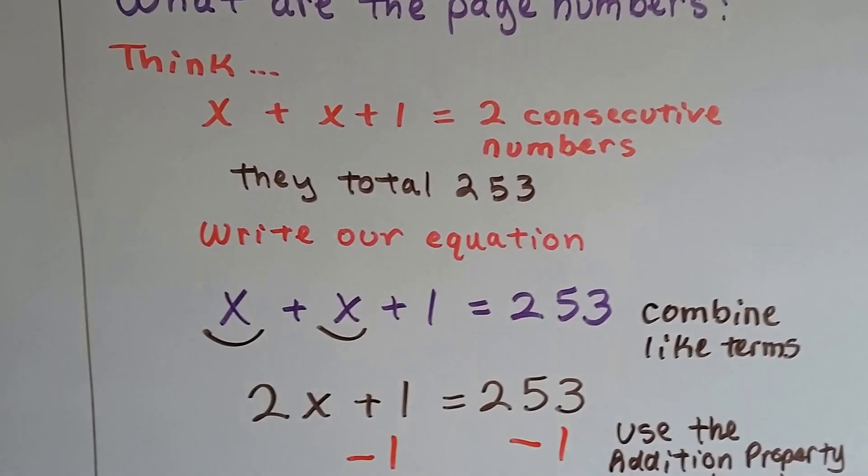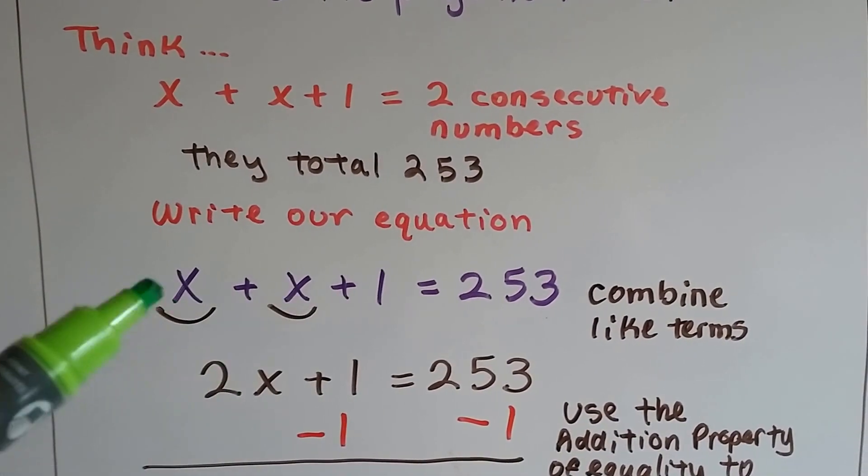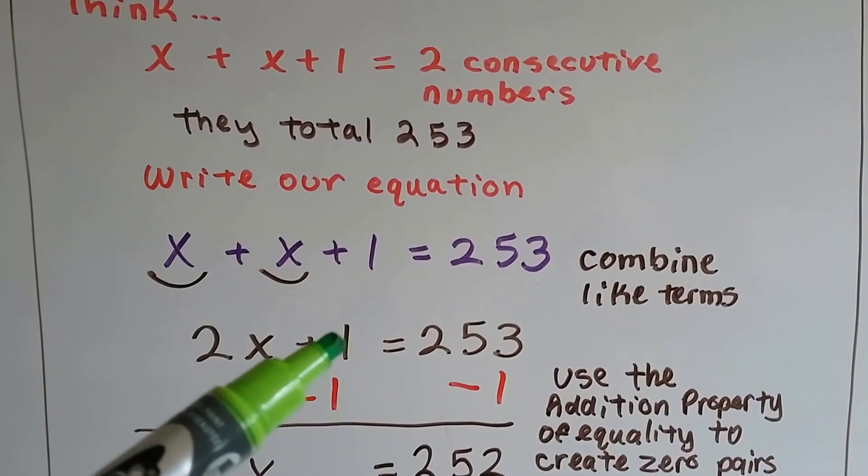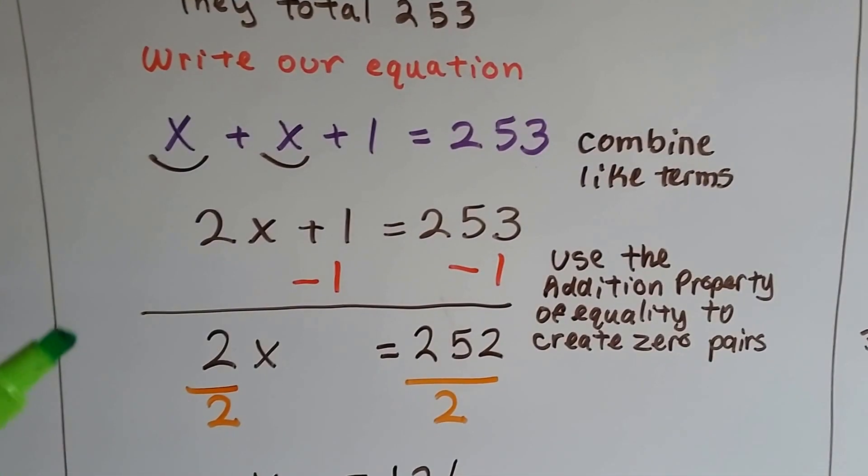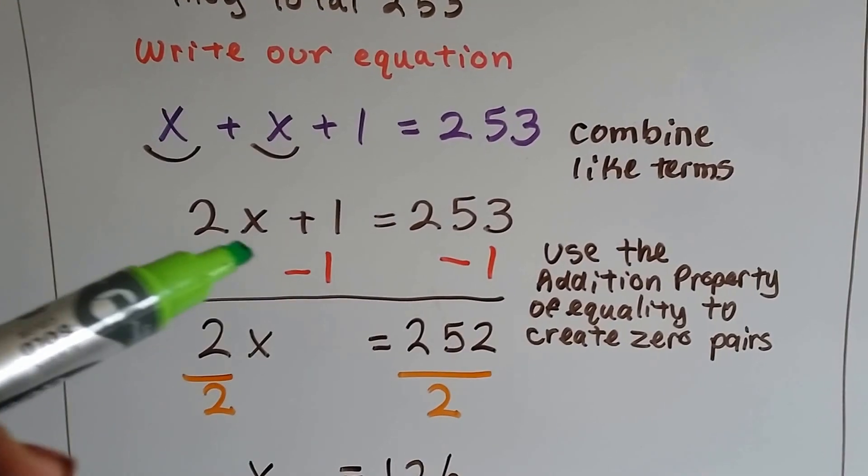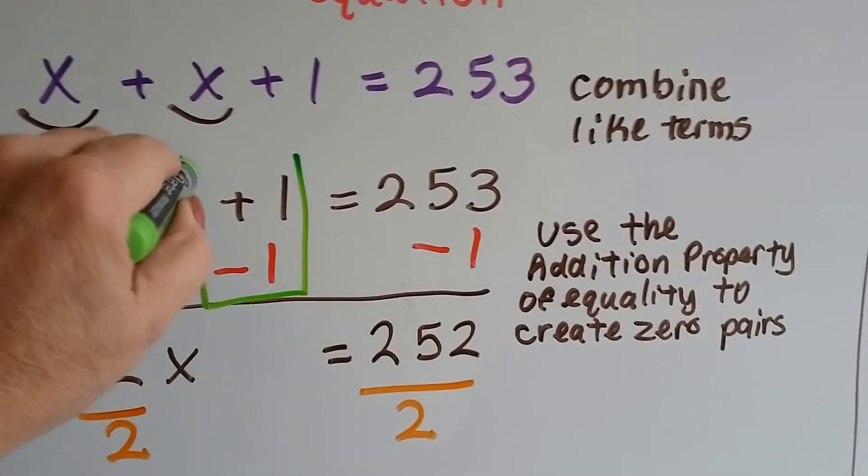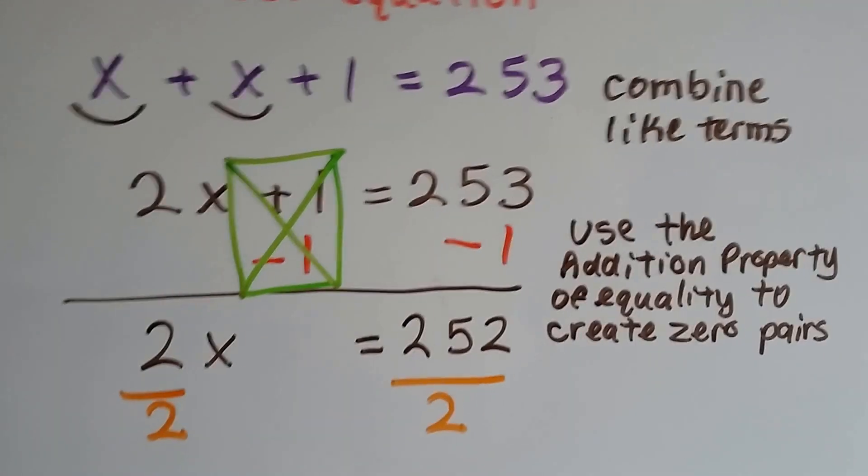x plus x plus one equals 253. We can combine these like terms and get 2x plus one. Now we can use what we've learned before, the addition property of equality to create zero pairs. So we have a plus one here. We'll take away one from each side.